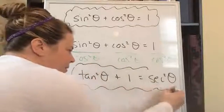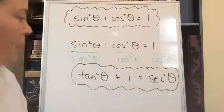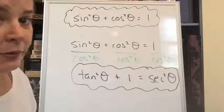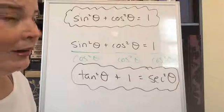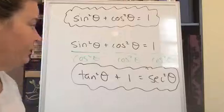So here we have another identity based on sine squared plus cosine squared equals one. Again, I don't have this one memorized. I always derive it.